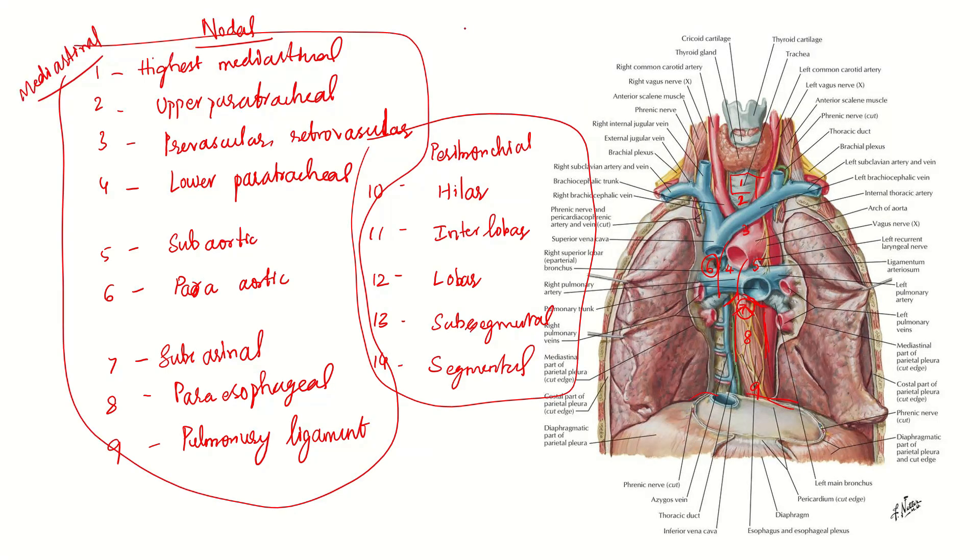Then comes our N staging: N1, N2 and N3. N1 is stations 10 to 14 nodes. N2 is all single digit numbers, 1 to 9 lymph node stations. N1 and N2 are ipsilateral. N3 is involvement of contralateral mediastinal or contralateral hilar, or contralateral scalene or supraclavicular nodes.